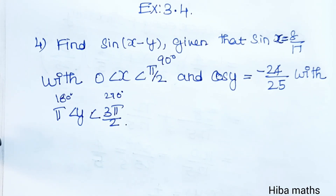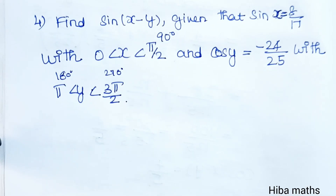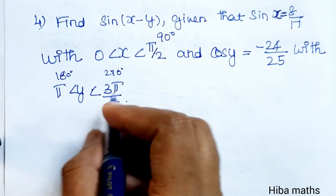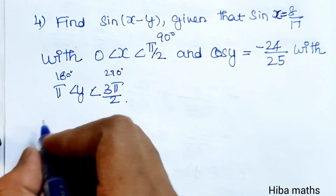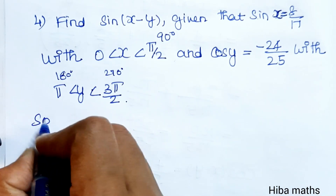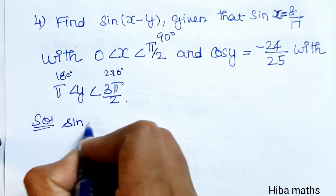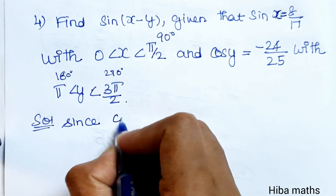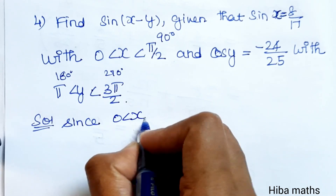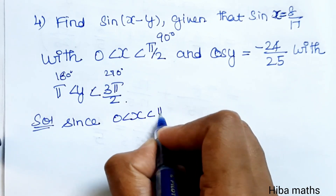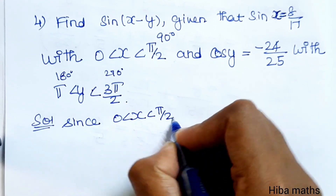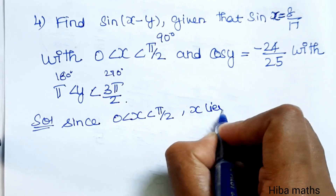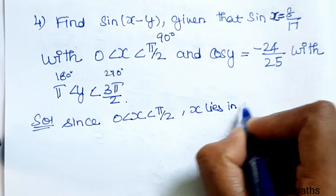To find sin(x - y), we first apply the formula. Since x is greater than 0 and less than pi by 2, x lies in the first quadrant.